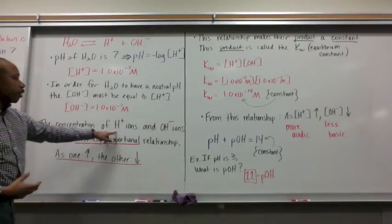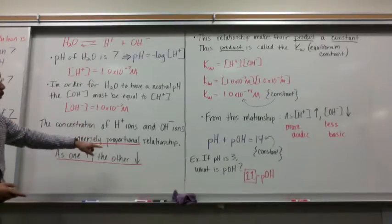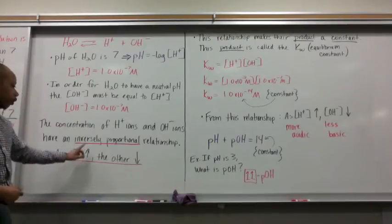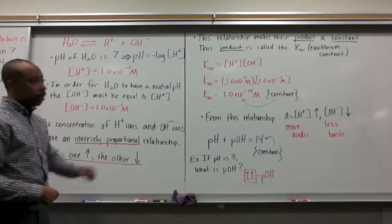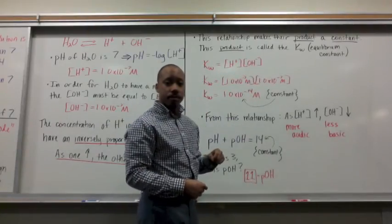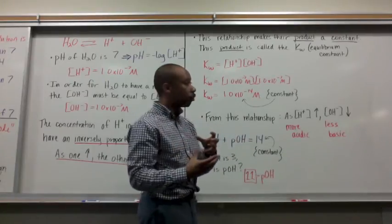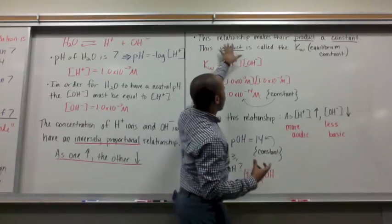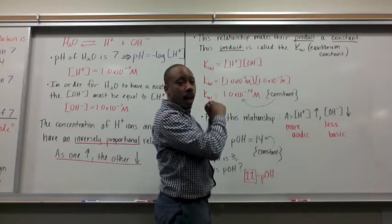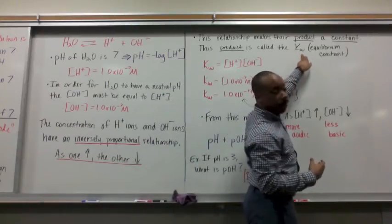Now the concentration of H+ ions and OH- ions have an inversely proportional relationship. We know what that relationship means. It's as one increases, the other decreases. This relationship makes their product a constant, just like with kinetic and potential energy. The product or the addition of those was a constant, mechanical energy. So the product of the concentration of my H+ ions and the concentration of my OH- ions is a constant. That constant is called K sub W, we call it KW, also called the equilibrium constant.